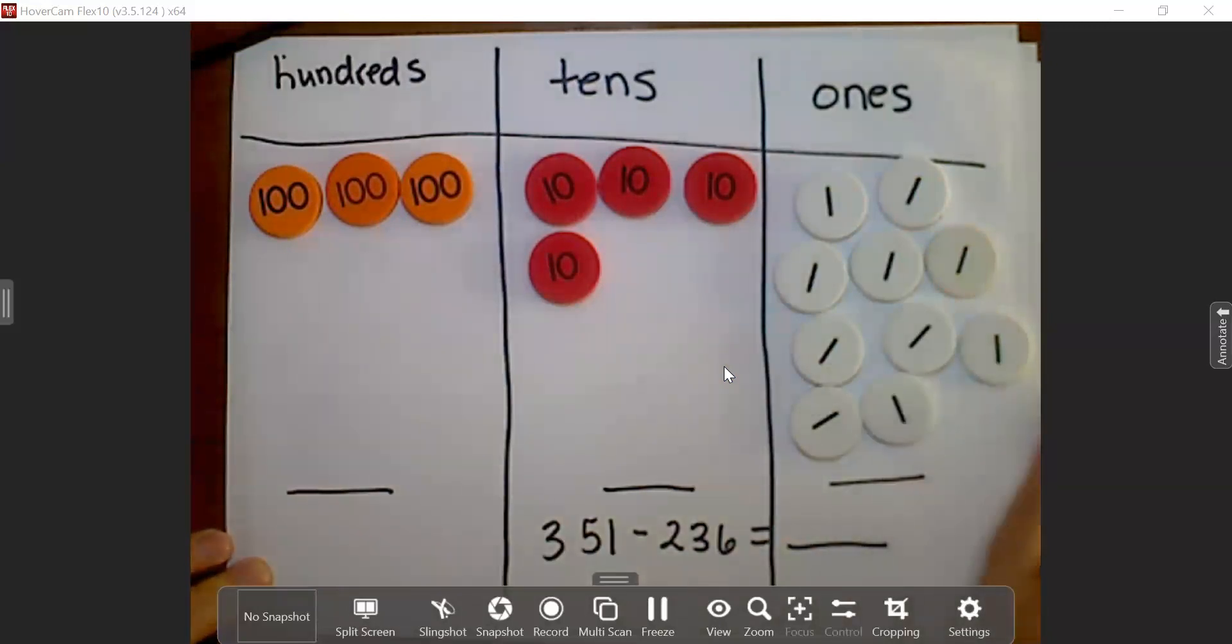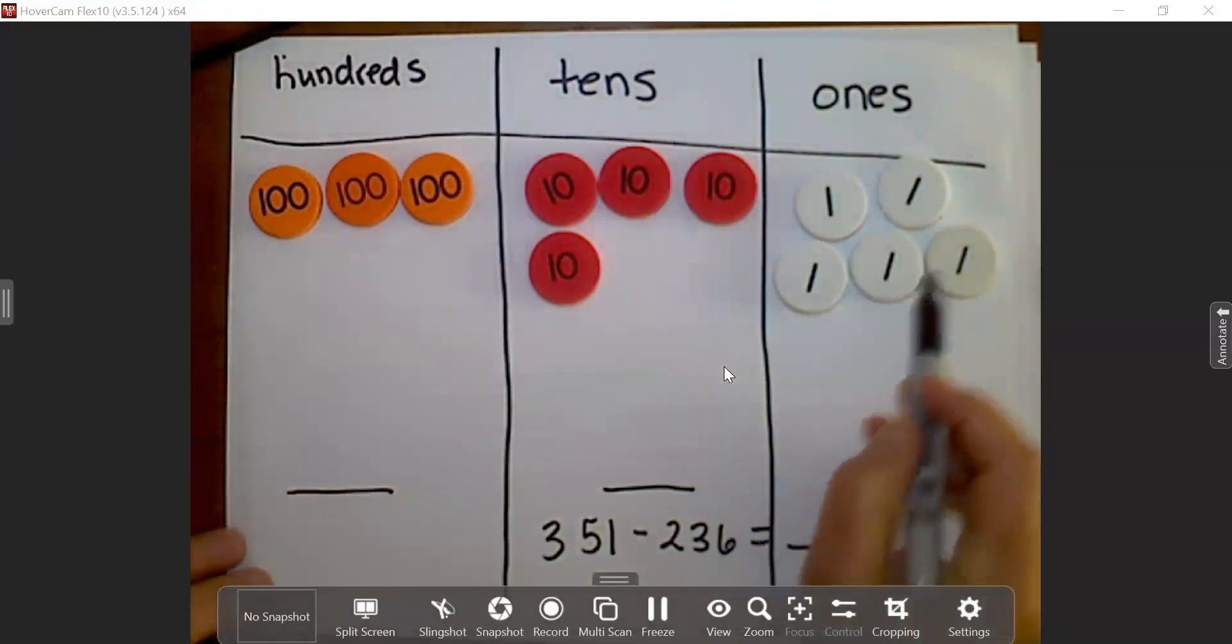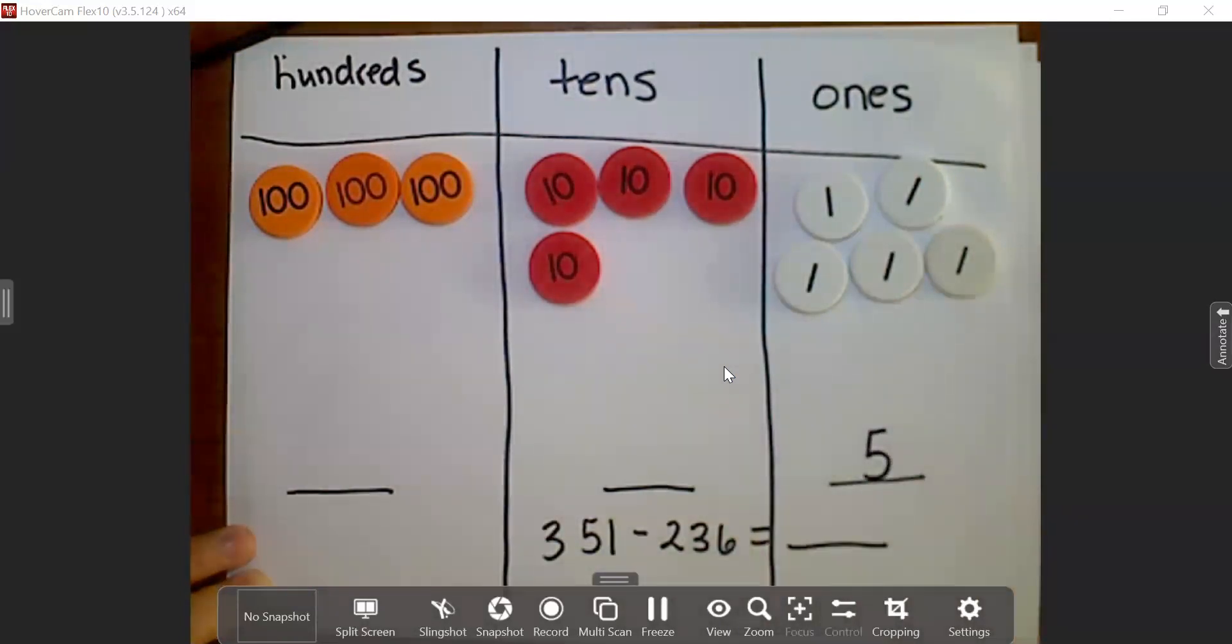I have plenty of ones now, and I can take away 6. So here they go: 1, 2, 3, 4, 5, 6. I have five ones left over. So 5 goes in the ones place.